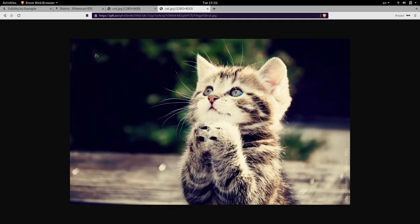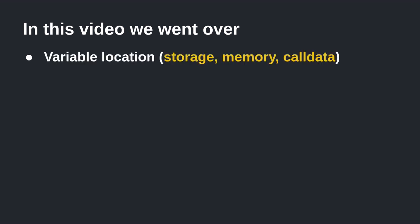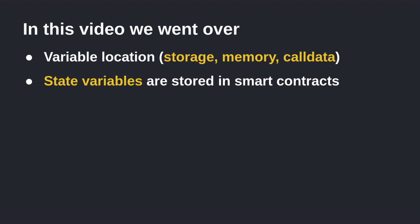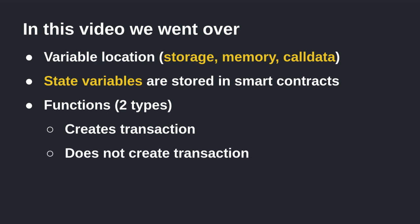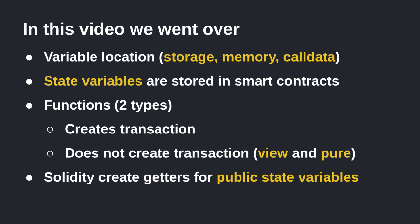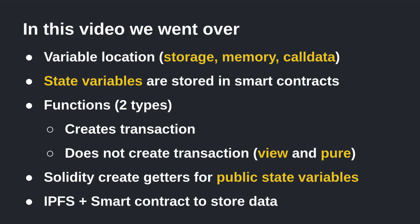In this video we talked about smart contract storage: variables are stored in three locations — storage, memory, and call data — but in most cases you only need to consider storage and memory. Variables stored in smart contracts are called state variables. Functions are categorized into two groups: ones that create transactions and ones that don't, with the latter declared using 'view' or 'pure'. Solidity automatically creates getter functions for public state variables. Storing data on a smart contract is expensive, and using IPFS lets you effectively save large amounts of data. Thanks for watching!